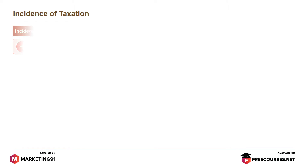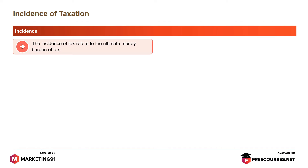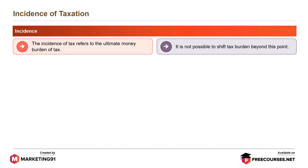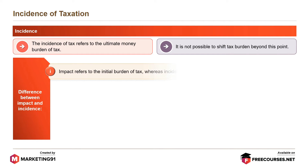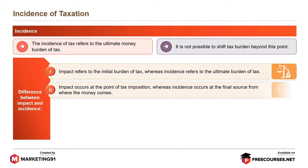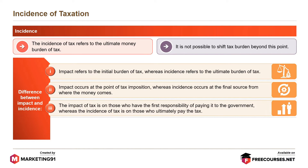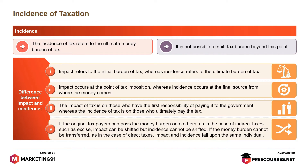Moving on to incidence of taxation. The incidence of tax refers to the ultimate money burden of tax. It is not possible to shift the tax burden beyond this point. The difference between impact and incidence is: impact refers to the initial burden of tax, whereas incidence refers to the ultimate burden of tax. Impact occurs at the point of tax imposition, whereas incidence occurs at the final source from where the money comes. The impact of tax is on those who have the first responsibility of paying it to the government, whereas the incidence of tax is on those who ultimately pay the tax. If the original taxpayers can pass the money burden on to others, as in the case of indirect taxes such as excise, impact can be shifted but incidence cannot be shifted. If the money burden cannot be transferred, as in the case of direct taxes, impact and incidence falls upon the same individual.